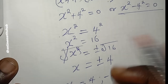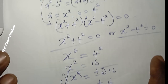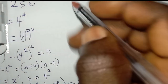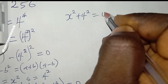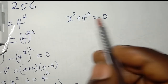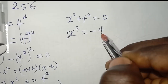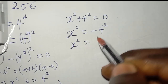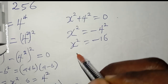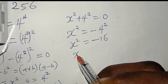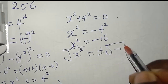Now let's solve the other case: x squared plus 4 squared equals zero. Moving 4 squared to the right-hand side gives x squared equals negative 4 squared, which is negative 16. Taking the square root of both sides gives x equals plus or minus the square root of negative 16.